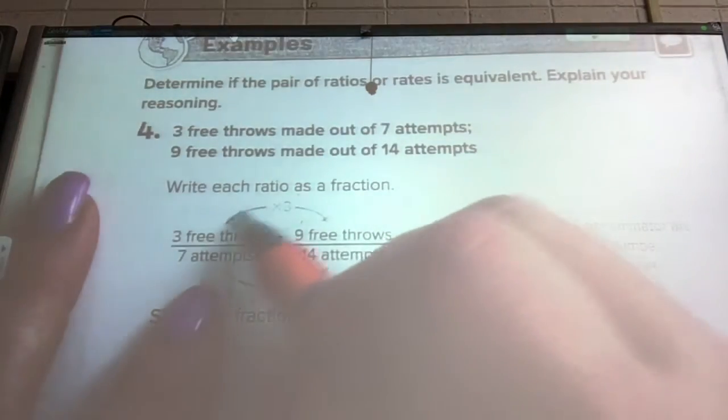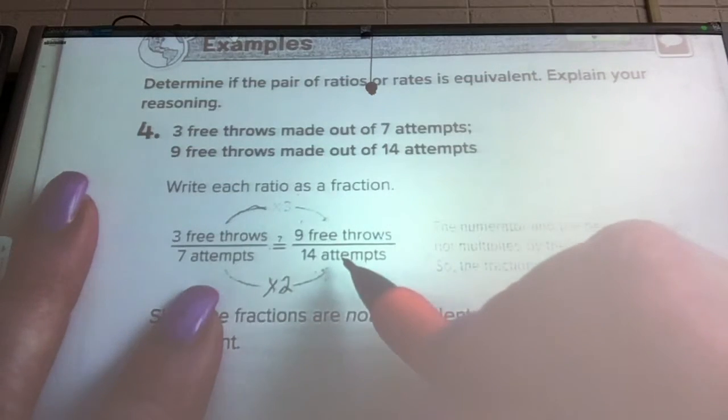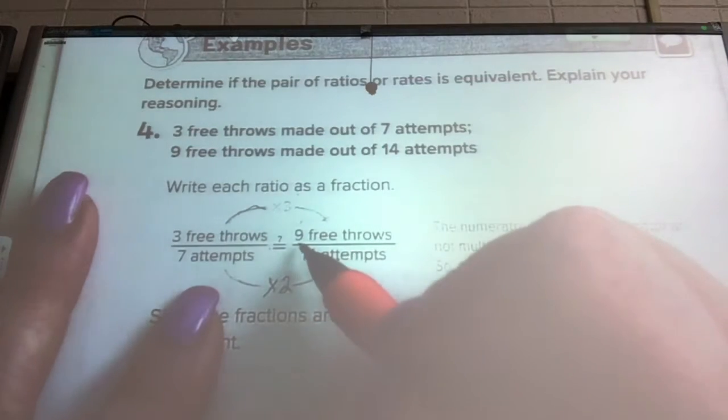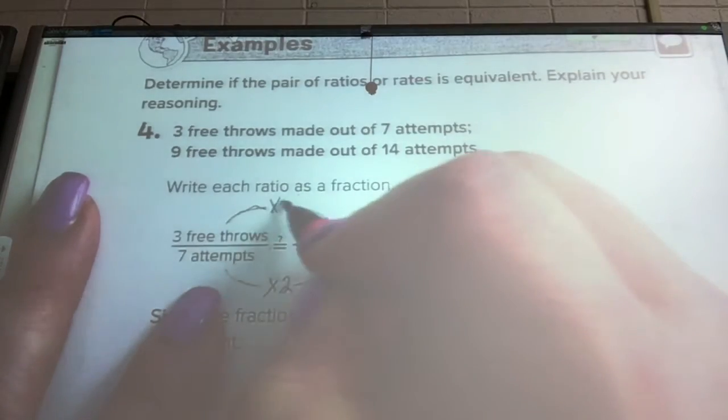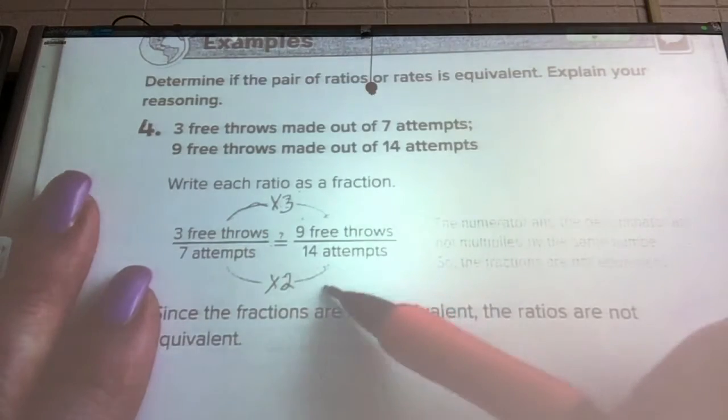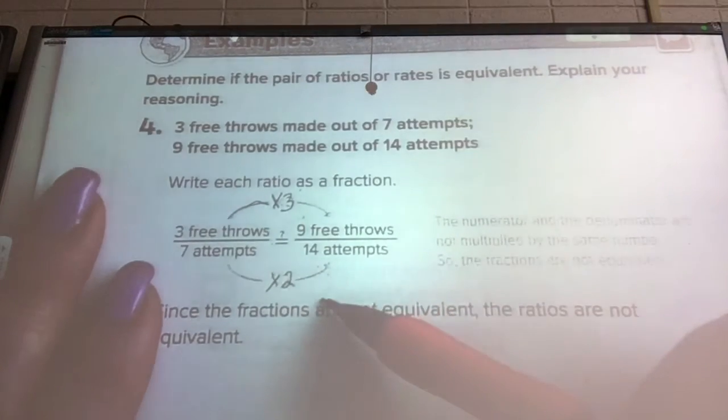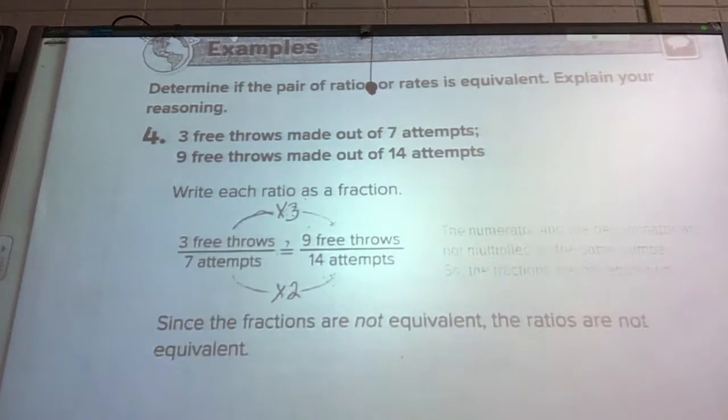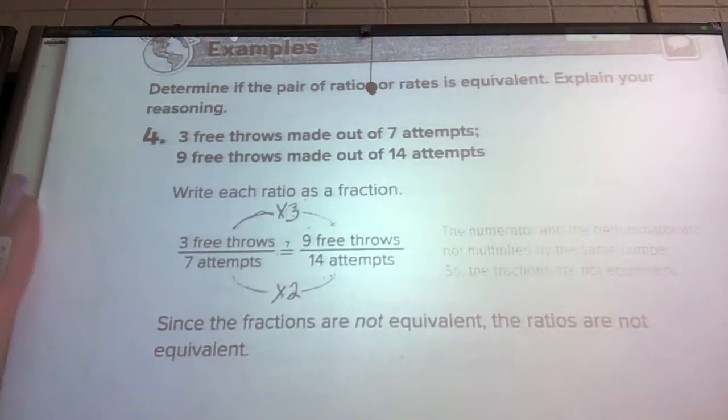If we did 3 times 2, what would we get? We would get 6, not 9. To get 9, we would have to go times 3. Because these two numbers are different, these rates cannot be equivalent. That's the key. If you can't do the same on the top and the bottom, those ratios, fractions, or rates are not equivalent.